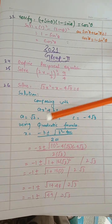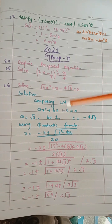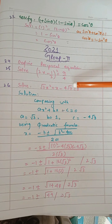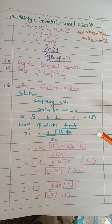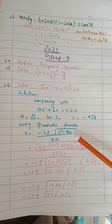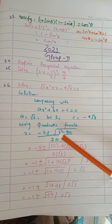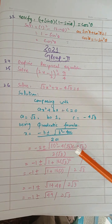When we compare it, A is equal to under root 3, B is equal to 1, and C is equal to minus 4 under root 3. Because this question is solved with the quadratic formula, here is the formula: minus B plus minus under the root B squared minus 4AC divided by 2A.